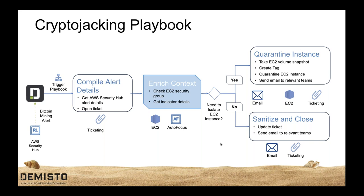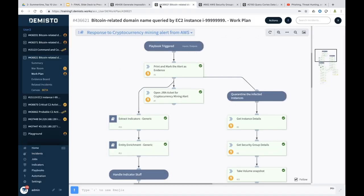Once you have these decisions, it's important to quarantine the EC2 instances — take volume snapshots, create tags so the organization knows the instance is being quarantined, and send relevant emails and reports to stakeholders. If it's a false positive, we can sanitize and close the ticket. Let's look at the cryptojacking EC2 remediation playbook in Demisto. We ingested this alert from AWS Security Hub, and the playbook is called 'Response to a Cryptocurrency Mining Alert.' The first step is marking the alert as evidence, then opening a ticket in Jira or ServiceNow, which Demisto readily integrates with.